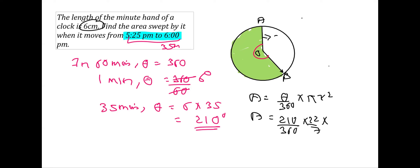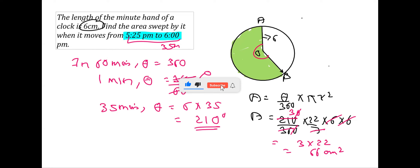The radius is the length of the minute hand, which is 6 centimeters. So the area is 210 over 360 times 22 over 7 times 6 times 6. Simplifying: 7 cancels with part of 210, zeros cancel, and we are left with 66 centimeter square. Cross-checking: 7 times 3 is 21, 6 times 6 is 36, leaving 3 and 22, giving 66 centimeter square.